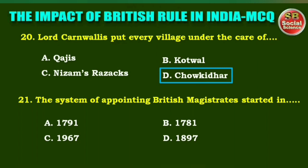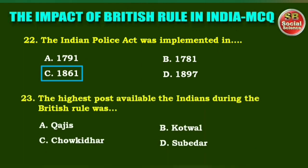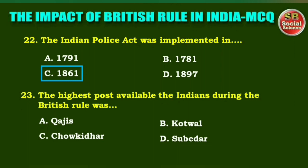The right answer is option B: 1781. Next question: The Indian Police Act was implemented in the year — options are: 1791, 1781, 1861, 1897. The right answer is option C: 1861. Next one: The highest post available to Indians during British rule was — Qazi, Kotwal, Chowkidar, Subedar. The right answer is option D: Subedar.